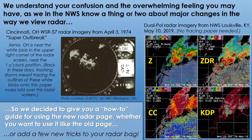For instance, on the left here is an image from the 1974 super outbreak, and this is how radar images used to look back in those days. We actually had to put tracing paper with a map on it over the screen and trace the outlines of these storms to track them. In modern times, everything's on the computer so we don't need any tracing paper — but modern radar is also much more complicated, detailed, and in-depth than the old displays.